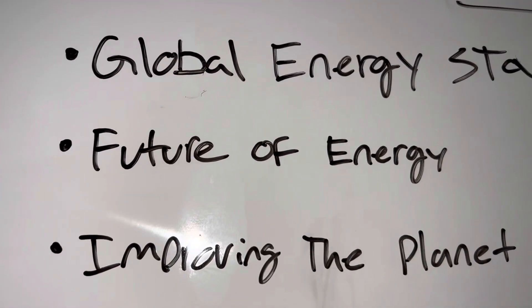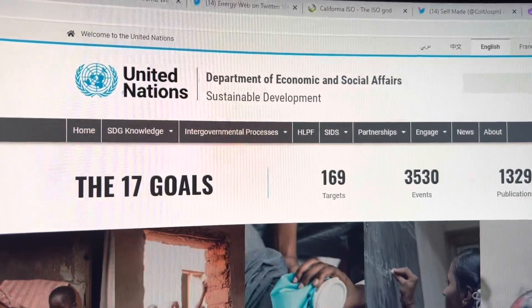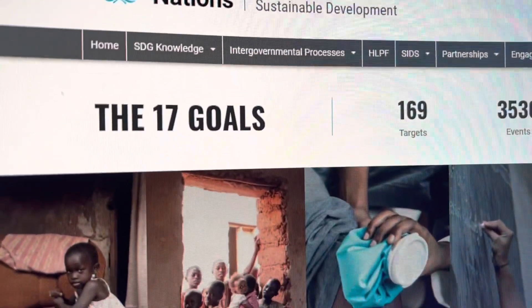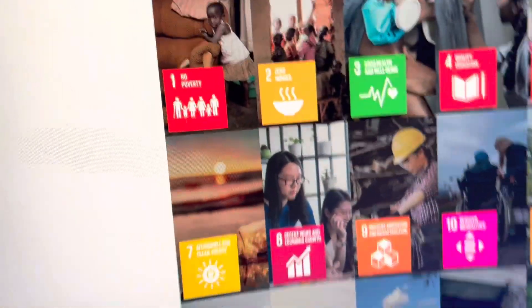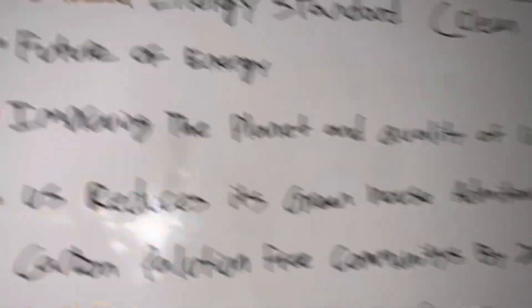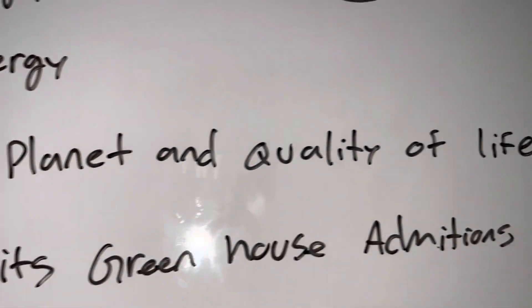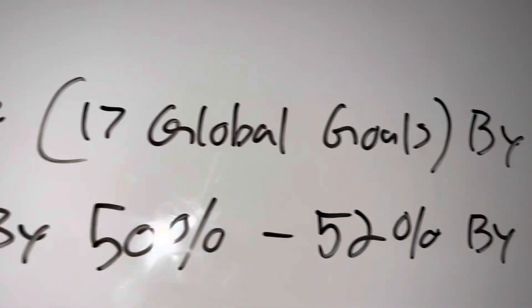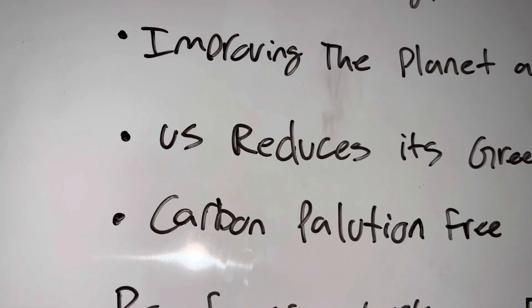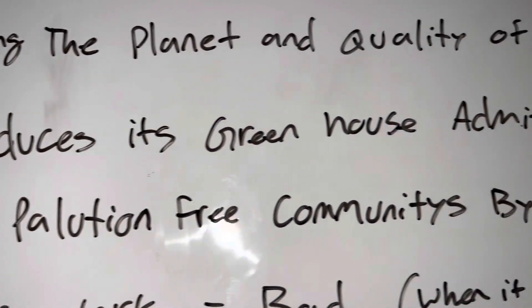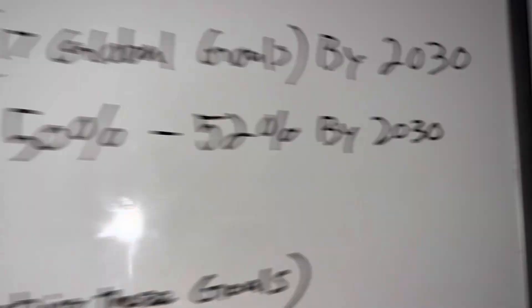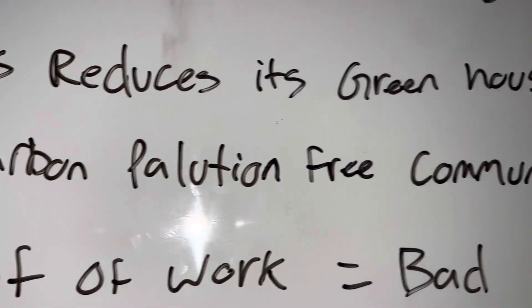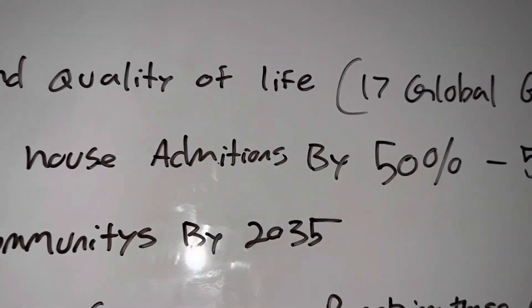Energy Web Token is the future of energy, in my opinion. The United Nations came up with the Sustainable Development Goals — 17 goals for sustainable development for the human race, with one of the big ones being affordable and clean energy. These goals are set to improve the planet and the quality of life for everybody on it, 17 goals by 2030. The US said they plan to reduce greenhouse emissions by 50-52% by 2030 and wants carbon pollution-free communities by 2035.